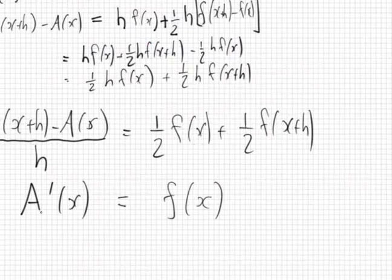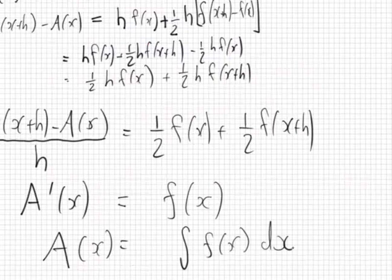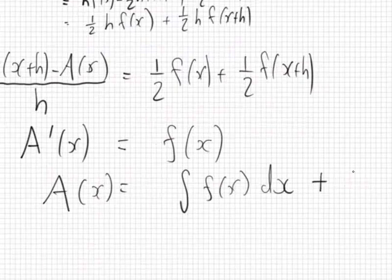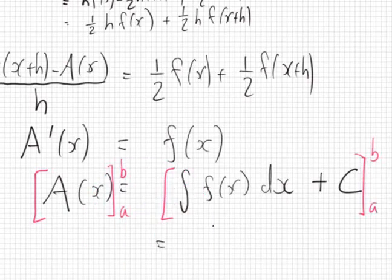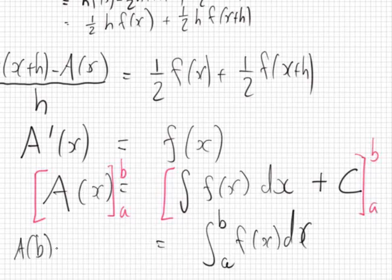So this is a derivative. What cancels a derivative? An anti-derivative. If I put an anti-derivative on both sides, I get A(x) equals anti-derivative of f(x) dx, plus of course the constant c. But if you put in limits b and a on both sides, you don't need the c. On the right you get the integral from a to b of f(x) dx.